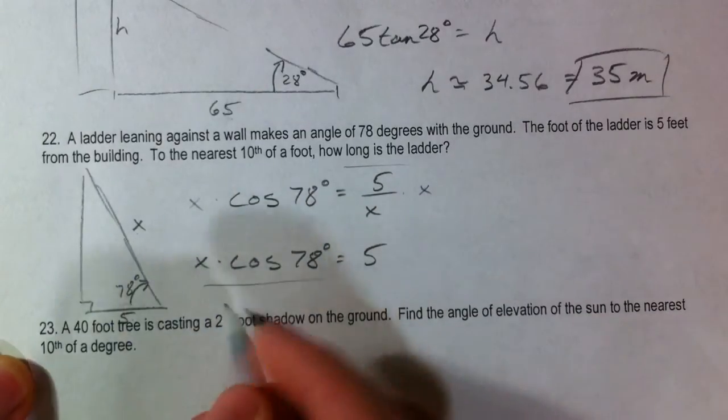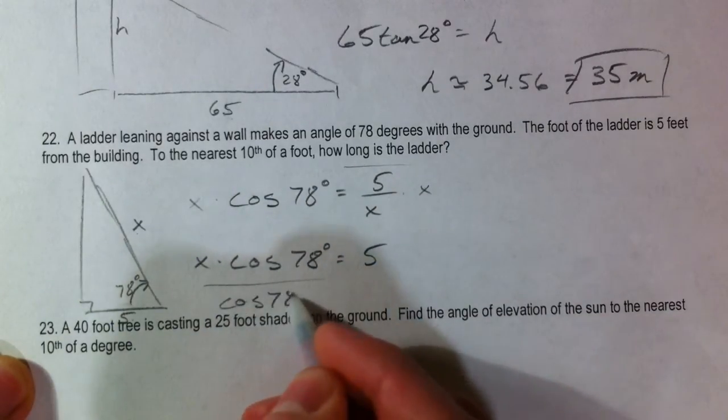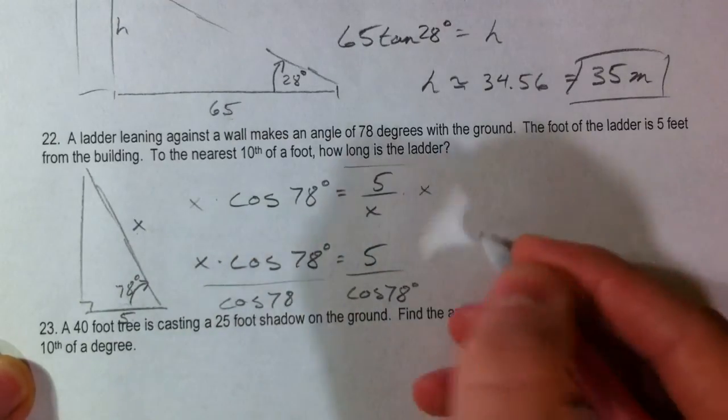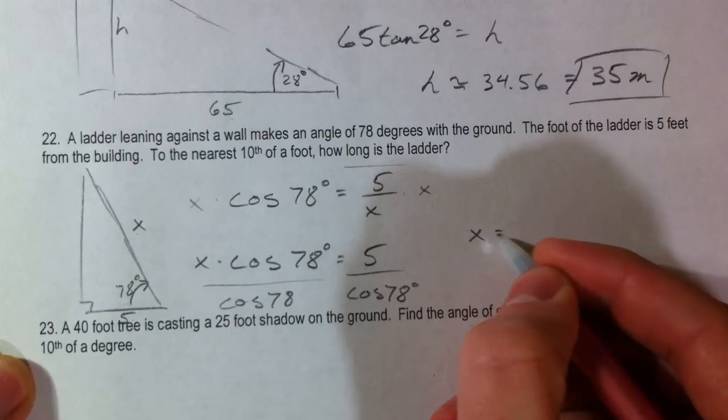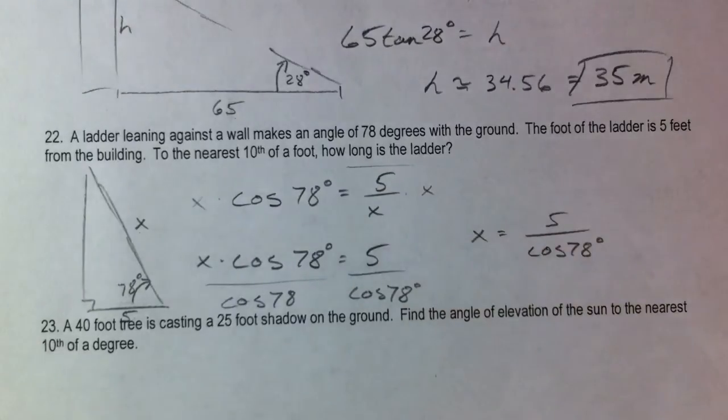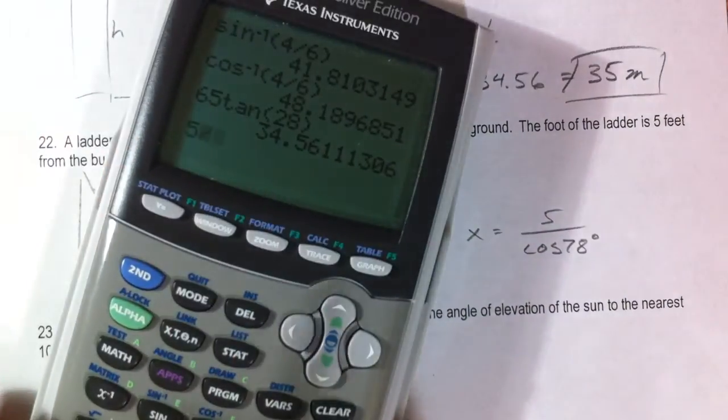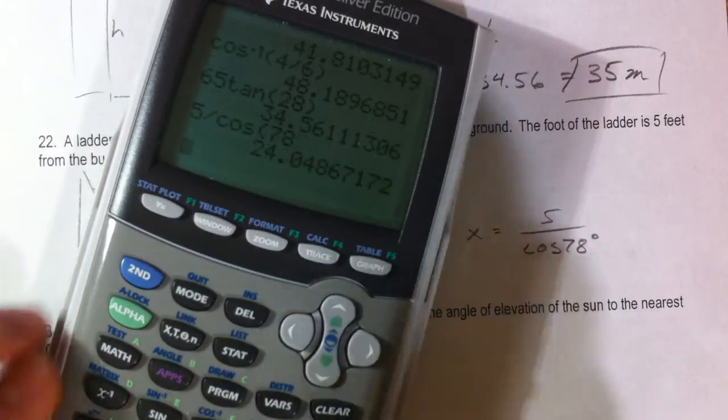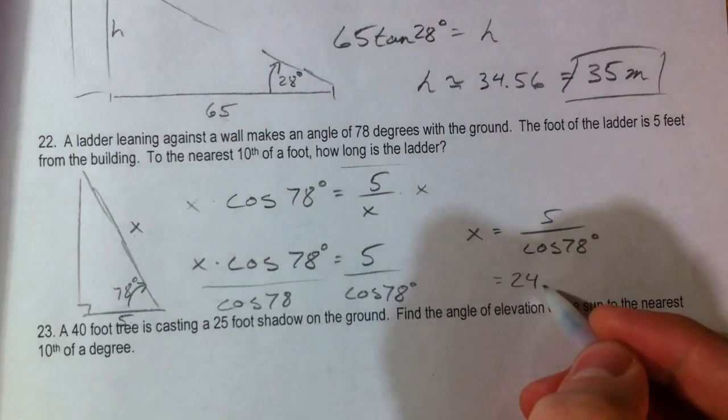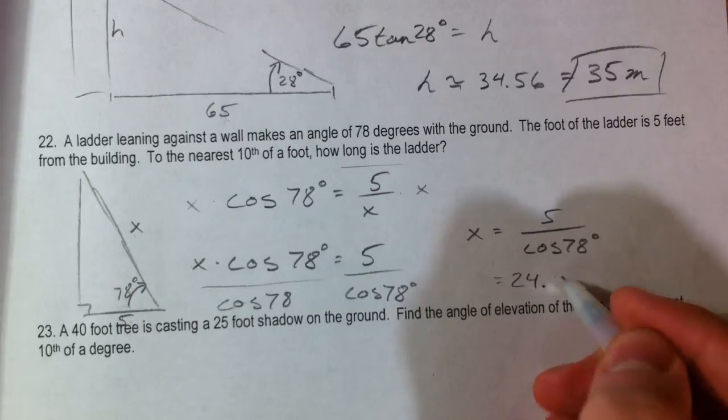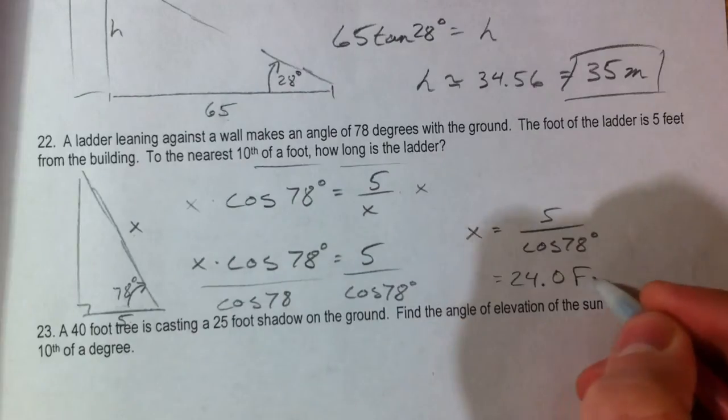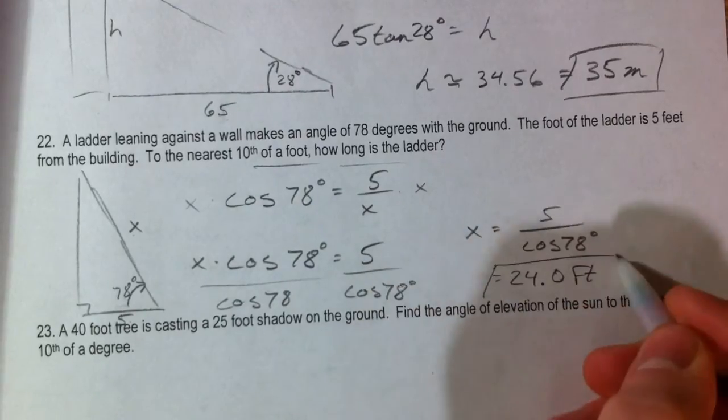Now that we have that, divide by the cosine of 78, because it's multiplied by the x. So x is equal to 5 divided by the cosine of 78, 5 divided by the cosine of 78 is 24.04. So it says nearest tenth of a foot, how long is the ladder, 24.0 feet.